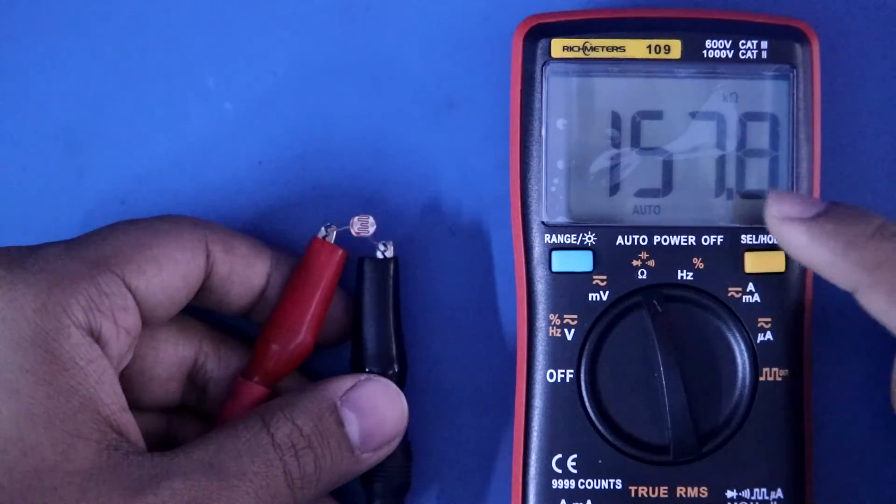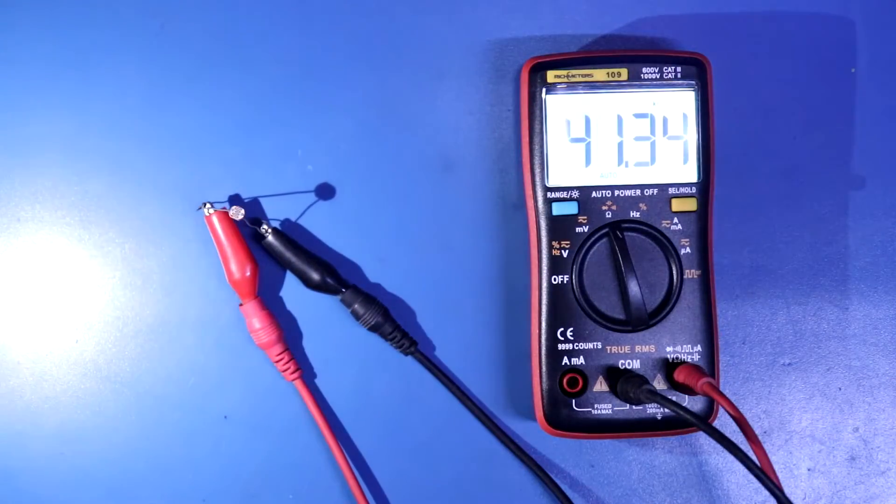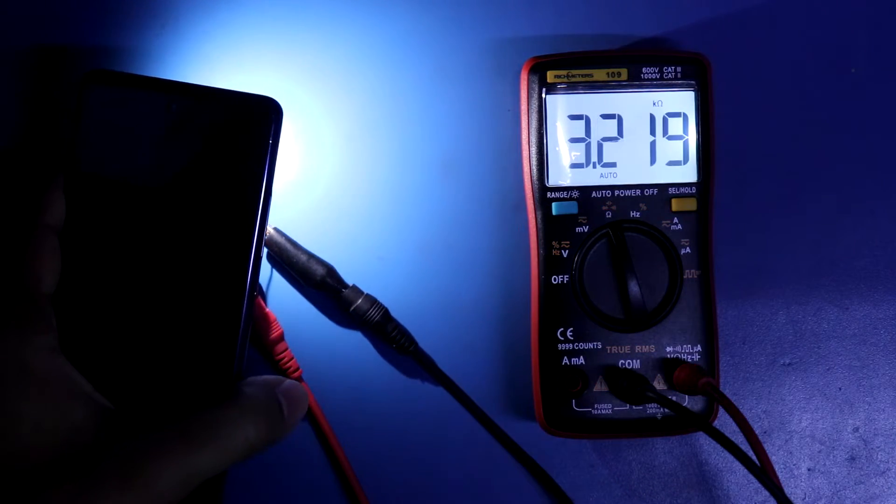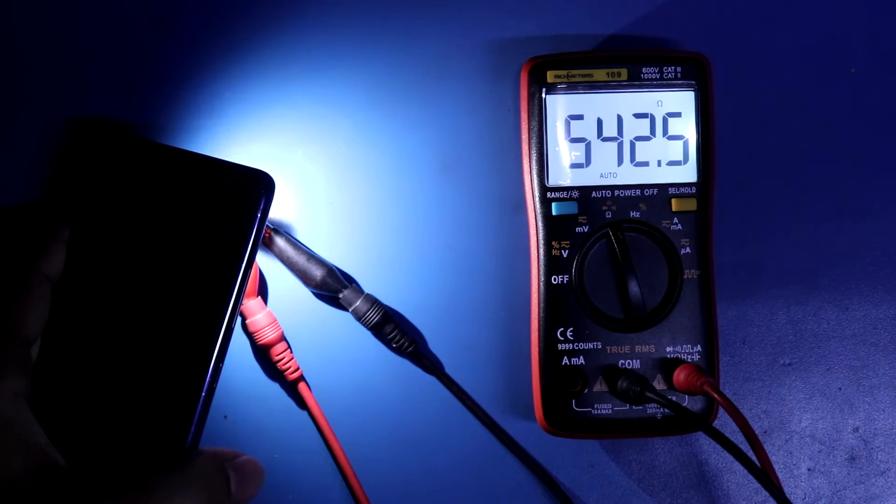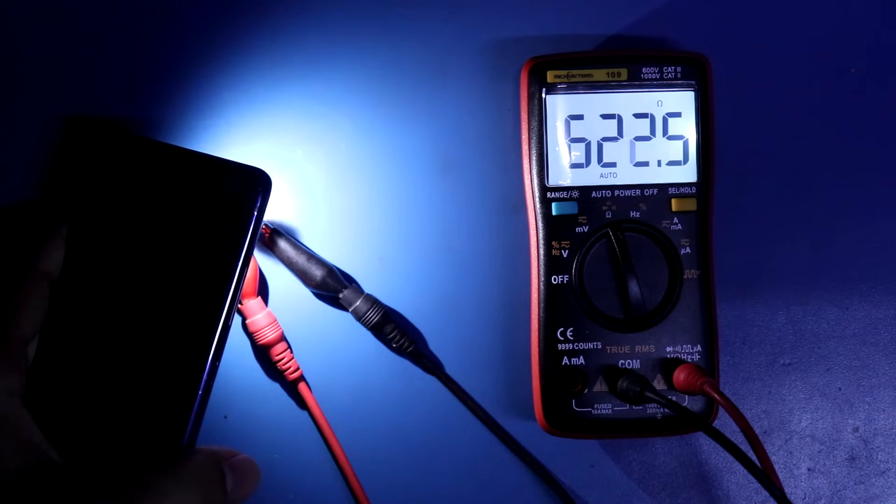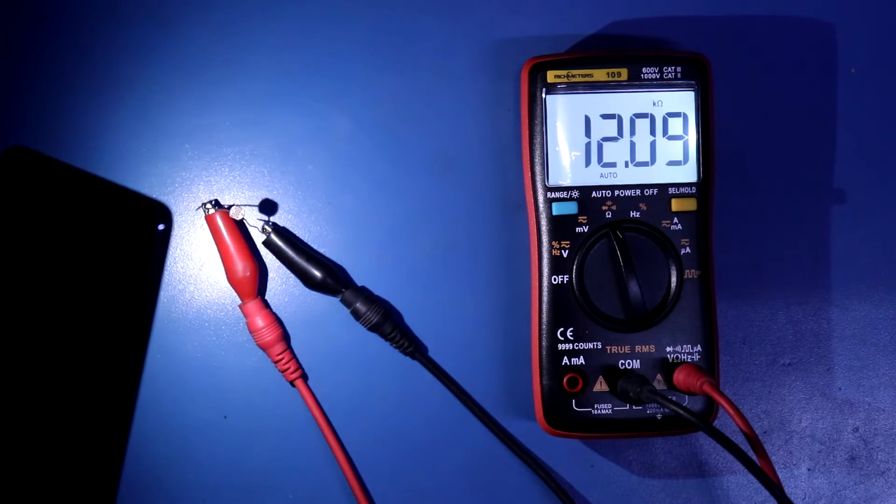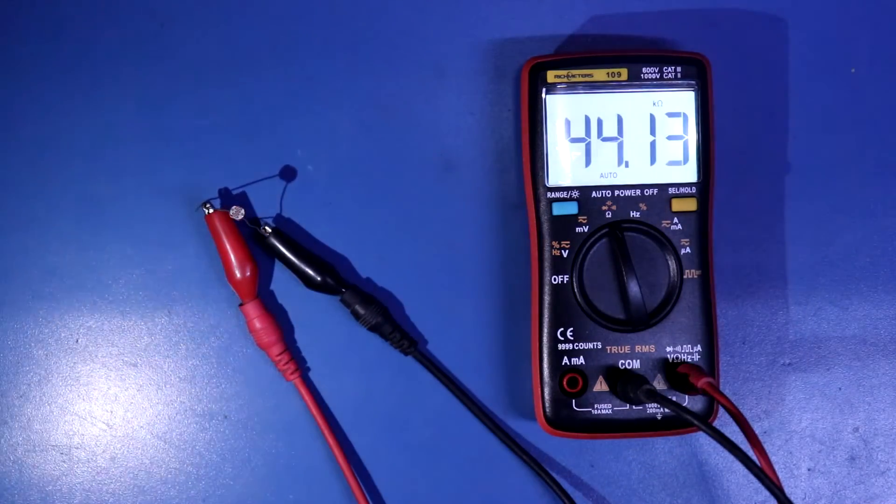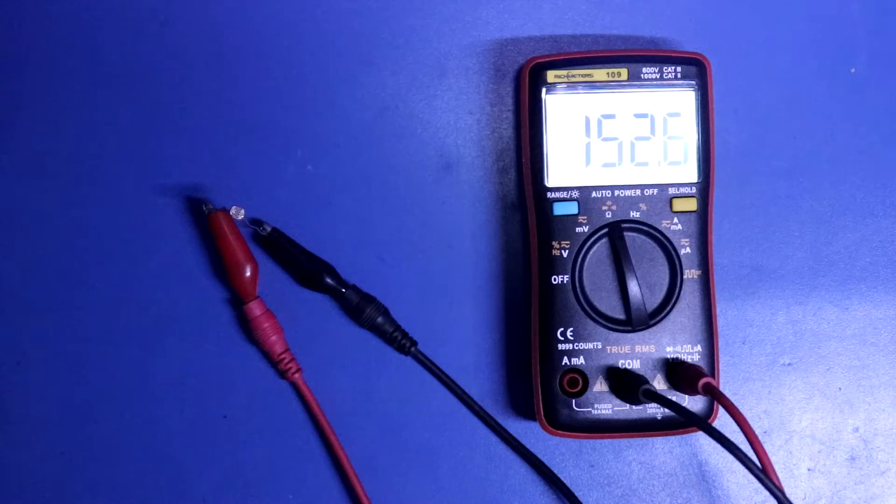The resistance value is 156 kilo ohms. Now the resistance is only 600 ohms. Decreasing the light intensity means increasing the resistance. More light means low resistance. So this is how LDR works.